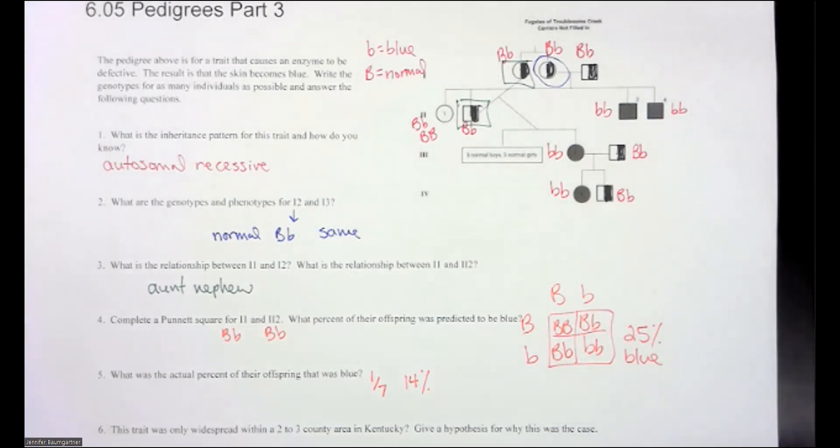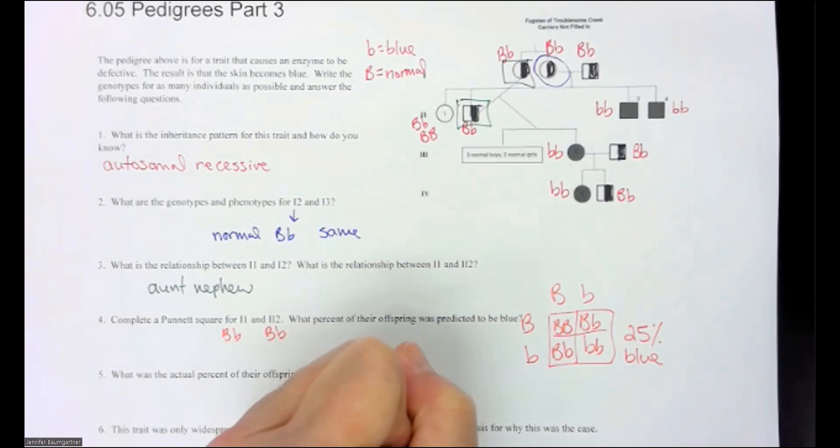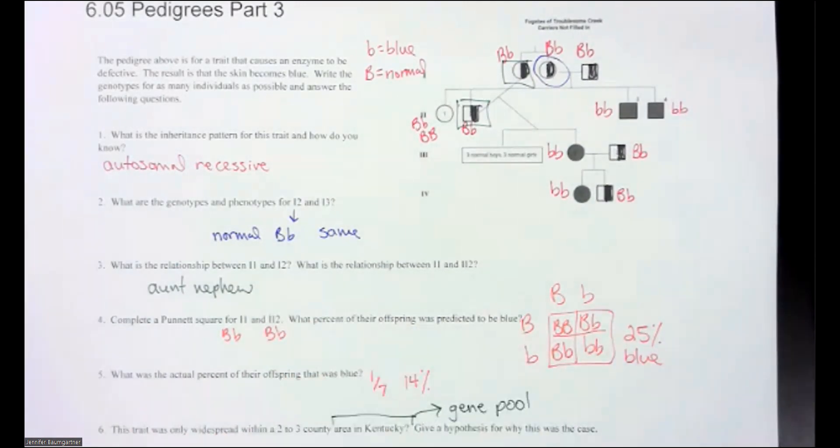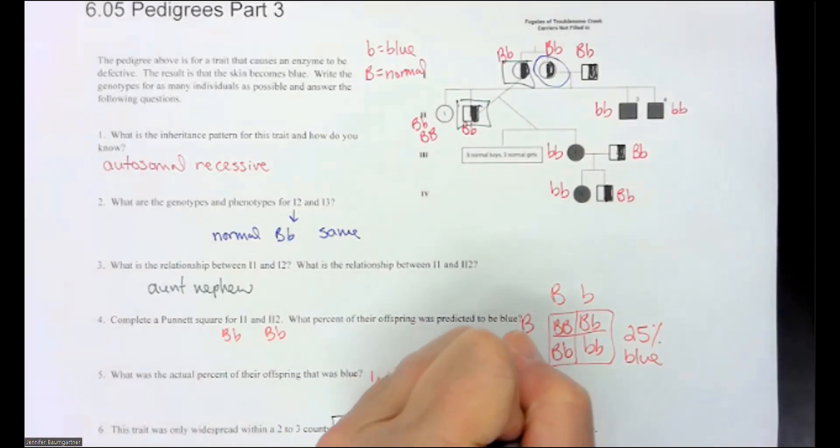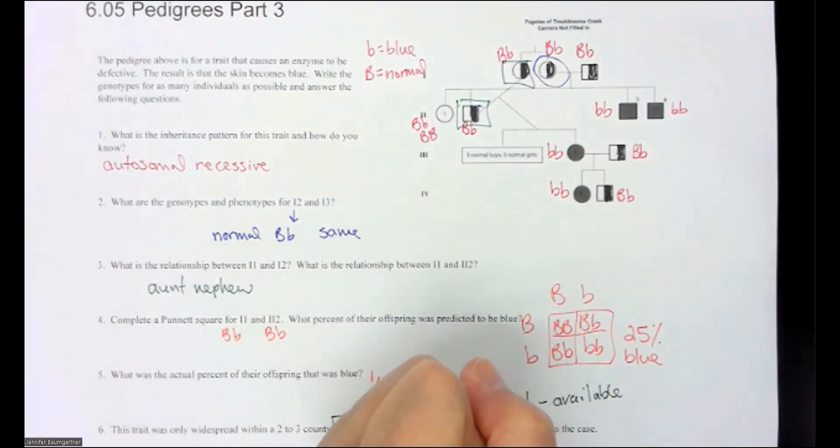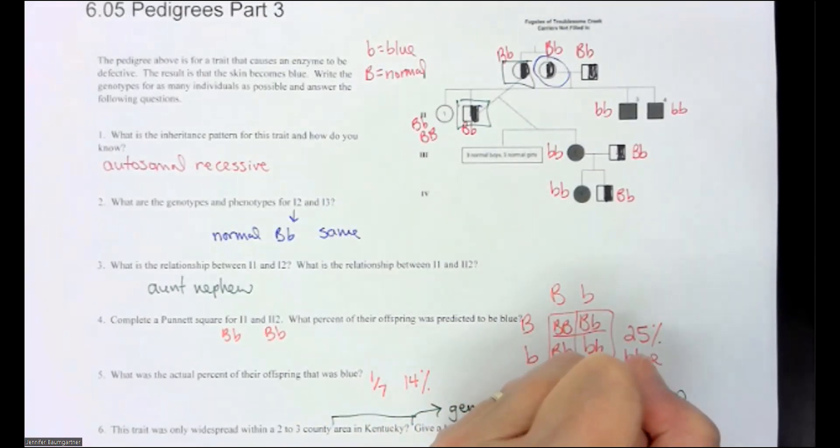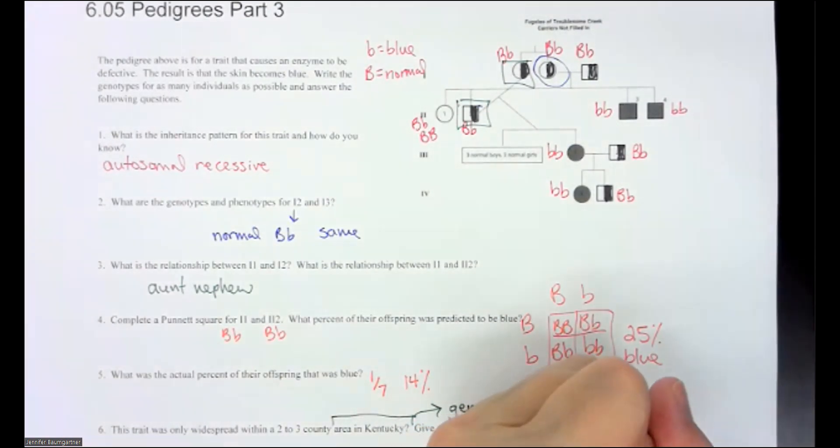And by the way, this is called a gene pool. So we call this a gene pool and a gene pool, we would say are the available, this doesn't have to be people. It can be squirrels, it could be dogs. So the available members of a population that can reproduce. And what you're seeing is there's a problem if you have a small gene pool, because if you have a bad trait, it just keeps getting bounced around and you don't get rid of it.